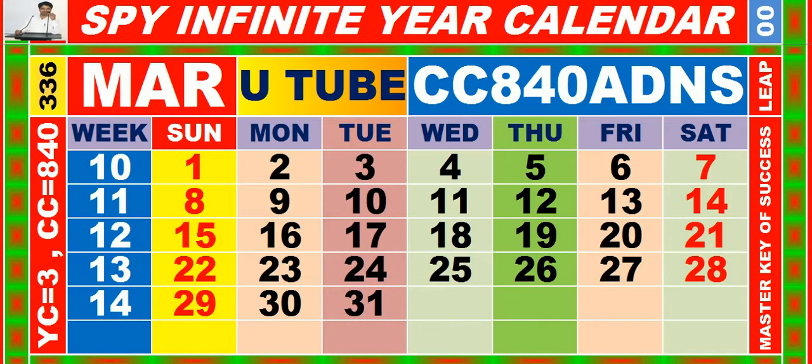Calendar for the month of March, having calendar code equal to 840.